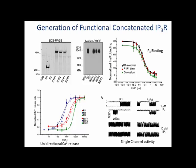As a proof of principle, we expressed R1-R1 dimers in null cells, and the R1 dimers were exclusively assembled into tetramers of 1.2 megadaltons, as indicated by a western blot of proteins separated on native gels. The R1 assembled from the dimer bound IP3 with an identical EC50 to receptor 1 assembled from monomeric R1 and receptor present in cerebellar microsomes, which is a rich source of type 1 receptor. Most notably, expression of all dimeric constructs tested — encoding both homo- and heterodimers — resulted in fully functional IP3 receptors as measured by G-alpha-Q receptor stimulation, unidirectional calcium release assays, and an on-nucleus patch-clamp assay of single-channel currents.